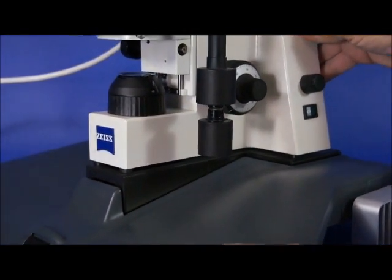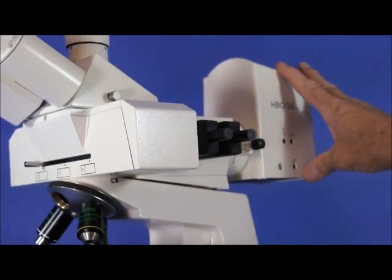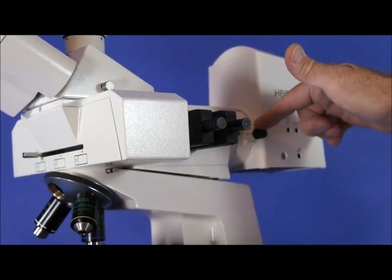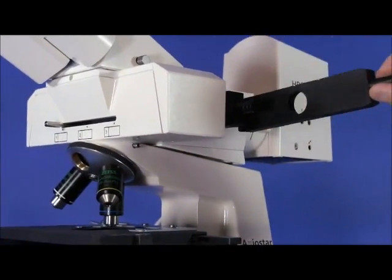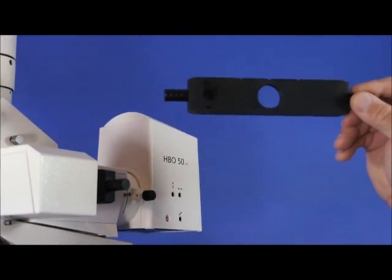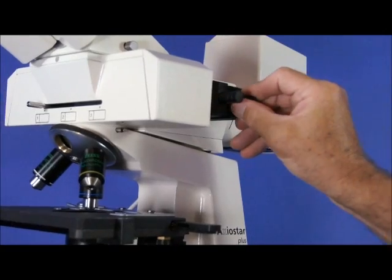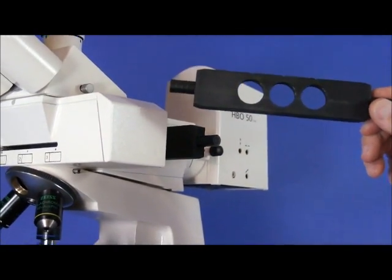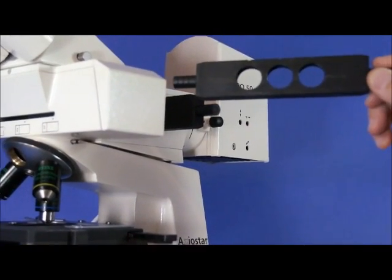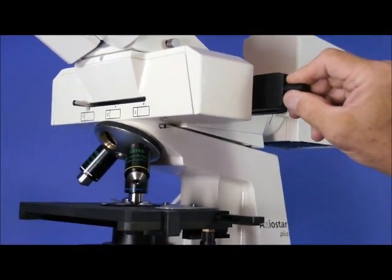On the side of the vertical illuminator for fluorescence you will see first of all the 50 watt lamp housing, the focusing knob for the lamp housing, a field stop which blocks the light or lets the light through for epifluorescence, and also an additional slider with three openings so that you can add filters of your choice depending on the kind of stain and excitation wavelengths you're using.